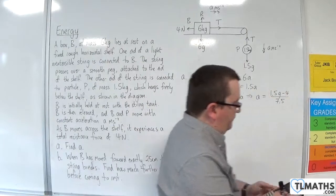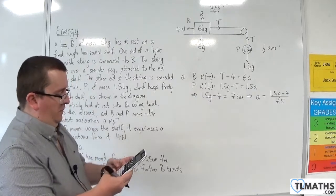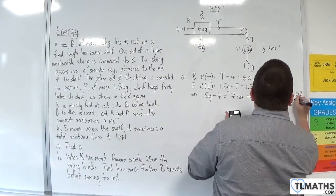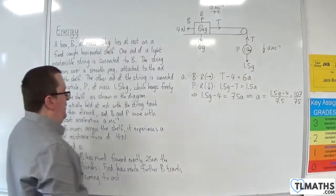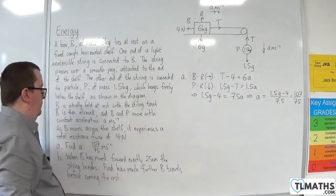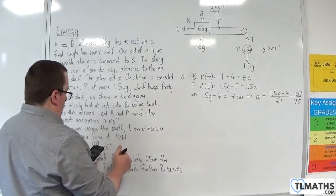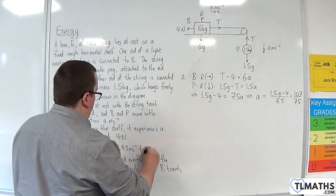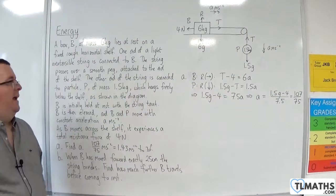OK, so, let's see if we can get that nicely. I'll work with g as 9.8. That's 107 over 75 metres per second per second. OK, so that's A. So, 107 over 75 metres per second per second. Of course, I could round that as well, but I won't use the rounded form in the next calculation. So, that would be 1.43 metres per second per second to 3 sig fig. OK, so, that is a first-year A-level maths mechanics problem.